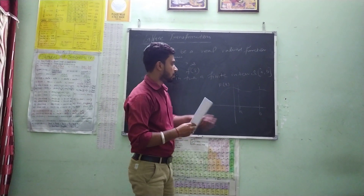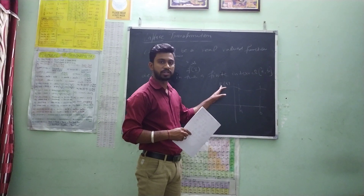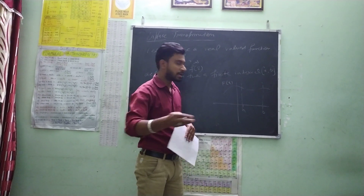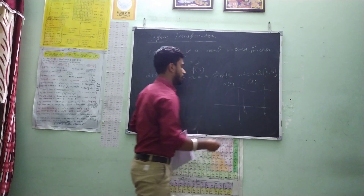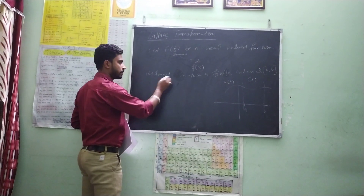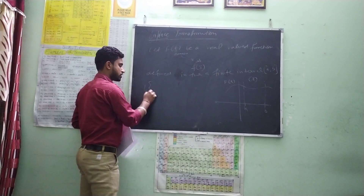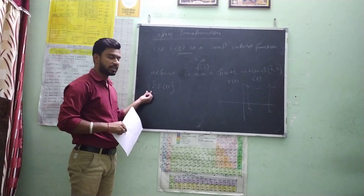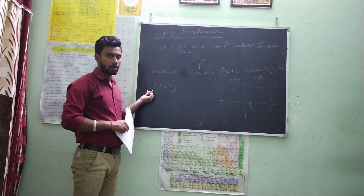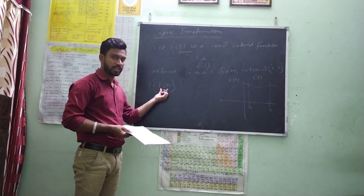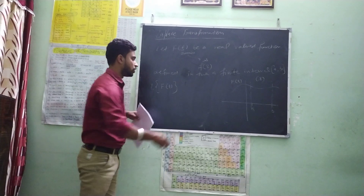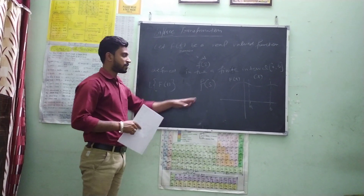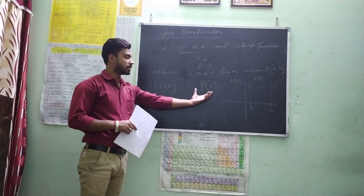Now we wish to transform this function into another function of another variable, that is s. So the Laplace transformation gives the result: Laplace transformation of f of t, where we apply the operator that is L. L is the operator which operates on f of t, and it converts it into another function that is F of s. So this is the basic transformation.